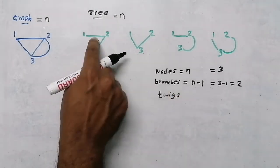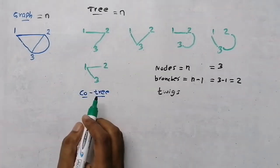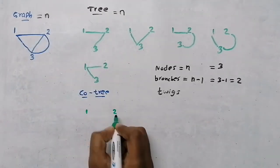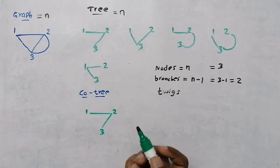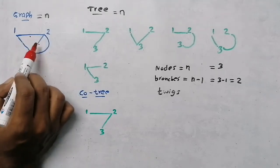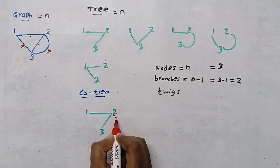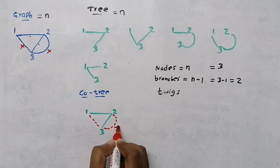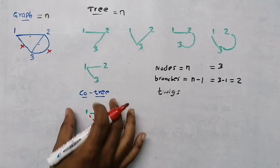The branches of a tree are called twigs. Now we discuss the cotree. From the graph we draw the tree by connecting all nodes (1, 2, and 3) without forming a closed loop. We took certain branches and eliminated the remaining two branches. Those eliminated branches are drawn as dotted lines.